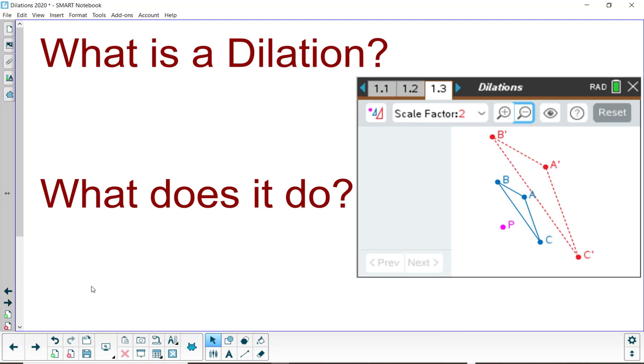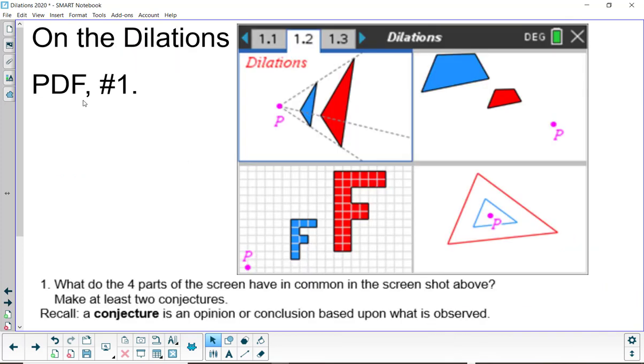So the first question is, what is a dilation and what does it do? Here we have triangle ABC dilated about point P with a scale factor of 2. Triangle ABC is the pre-image, the blue one. The red one is the image and that is triangle A' B' C'. So this is the dilations PDF number one.